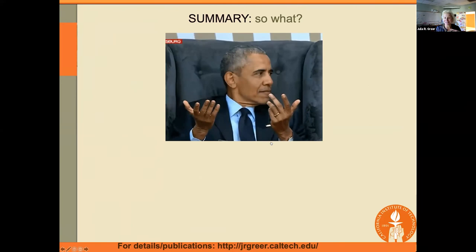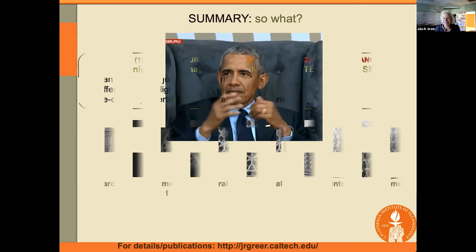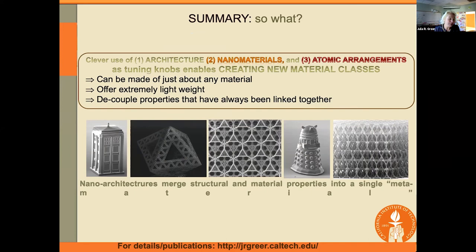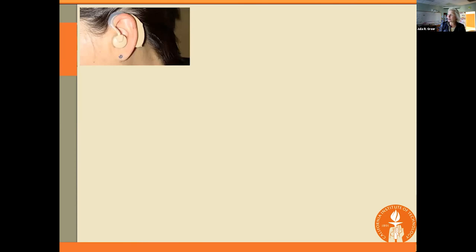So the big question is: so what? You're making all these materials — they're kind of cute, maybe pretty to look at, but what's the big deal? The big deal is this: if you are clever about prescribing and designing the right architecture, understanding the atomic-level microstructure of your material, and understanding how this nano-induced size effect plays a role, it is possible to create entirely new classes of materials whose properties are no longer coupled — like in the plot I showed you, where everything tends from left to right. You can now decouple these properties and design and optimize for them. It's an entirely new by-design world that can be explored if we could really scale them up.